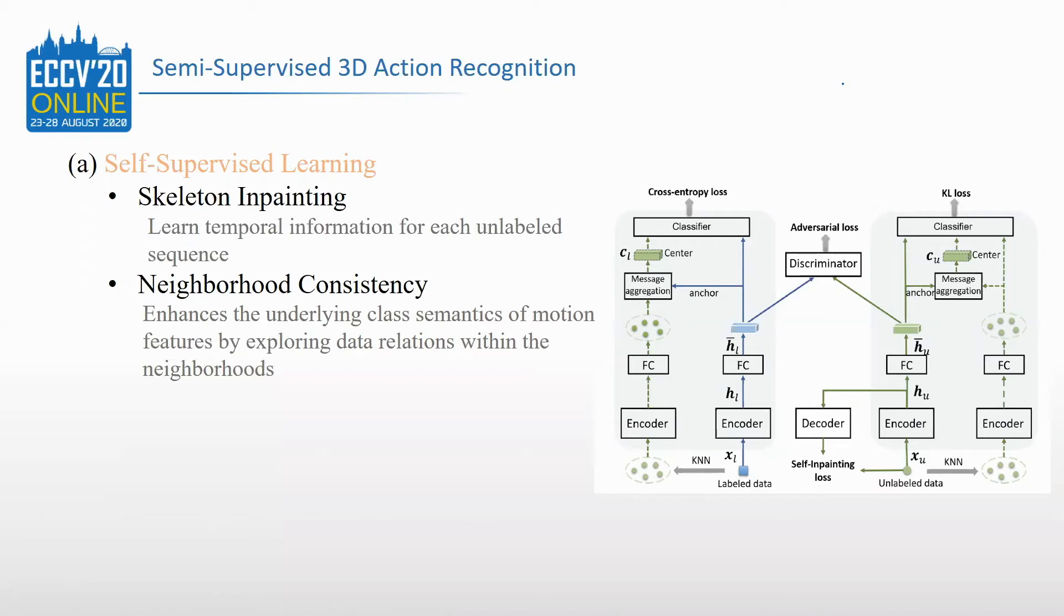Skeleton data represents a person by 3D positions of joints. It becomes very difficult to use self-supervised learning to learn motion features. So in this work, the self-supervised learning contains two parts: skeleton inpainting and neighborhood consistency.